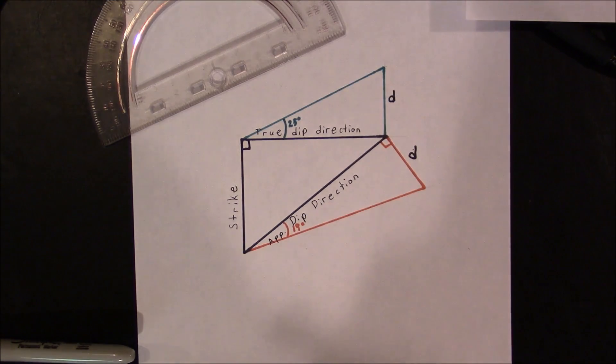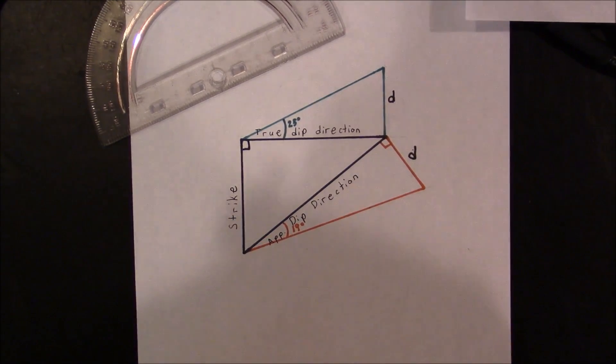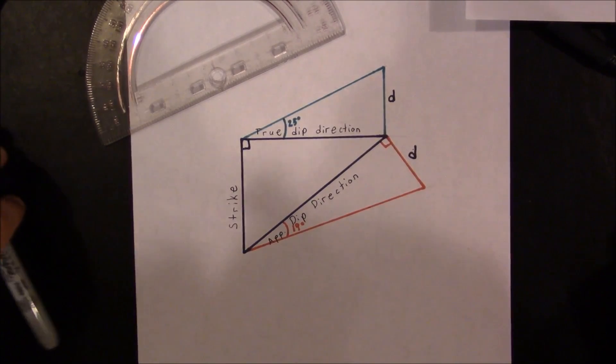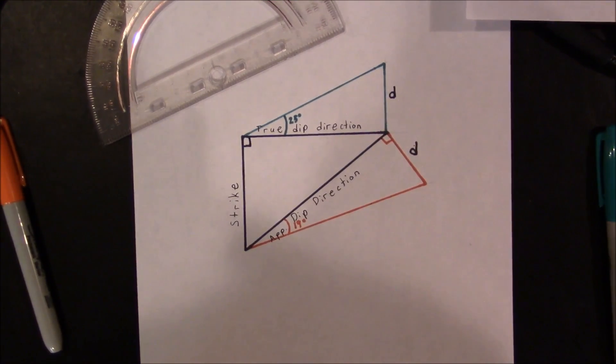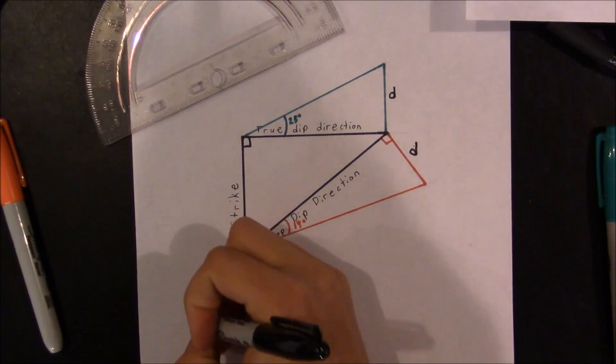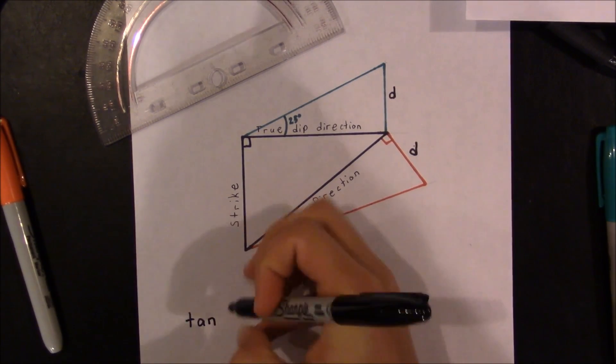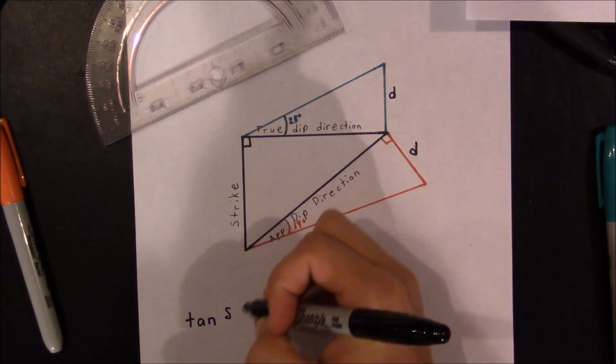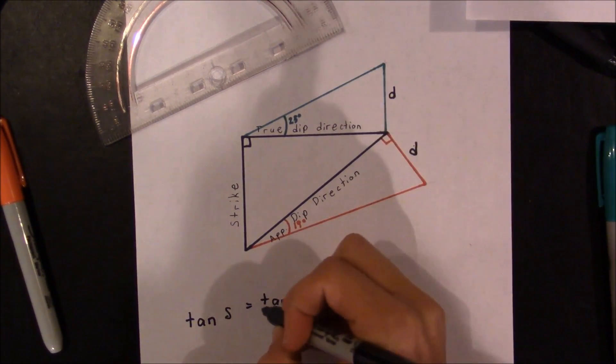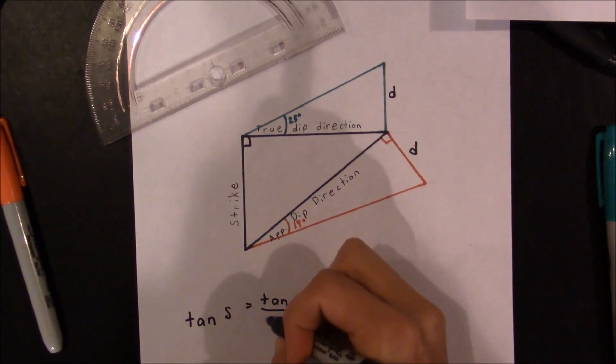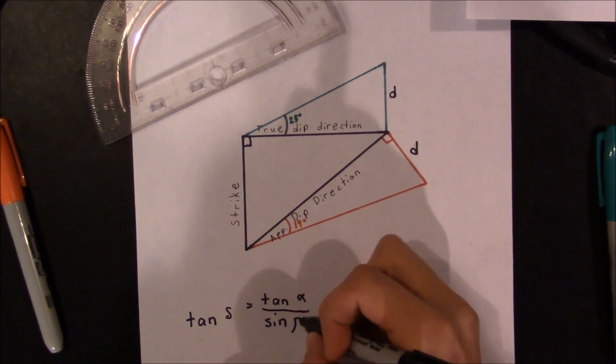The next method I'm going to talk to you guys about is that of trigonometry, and this is arguably the easiest one. So there's a derivation to prove this particular formula, but I'll save that for another video. I'll link that in the description. But the formula to figure out the true dip is this,